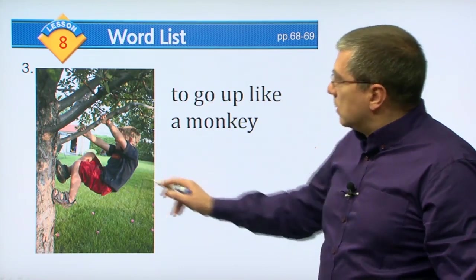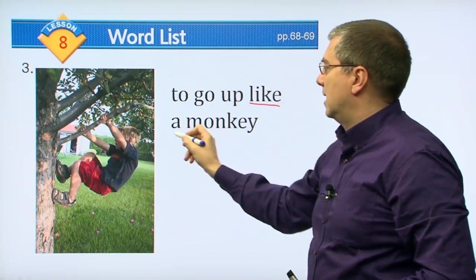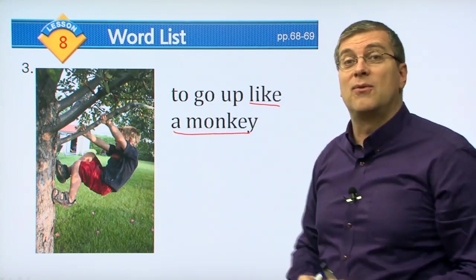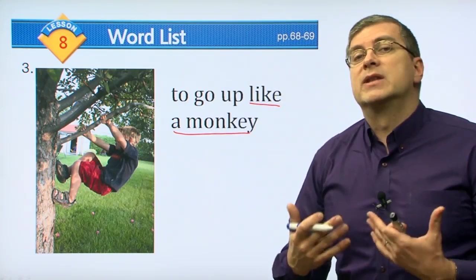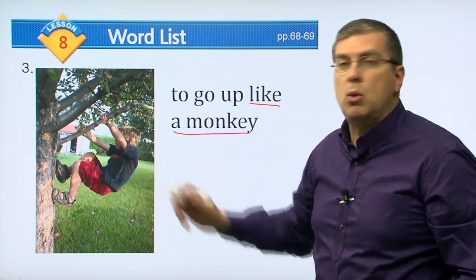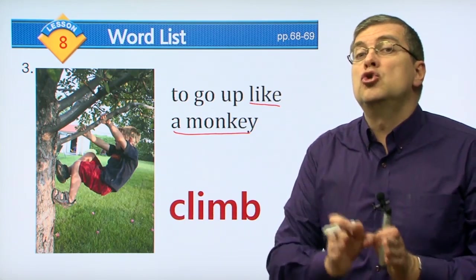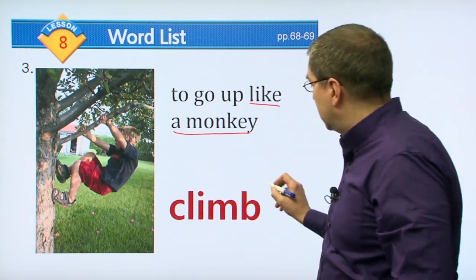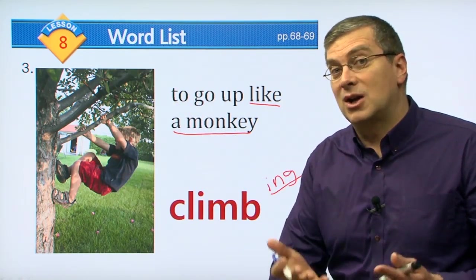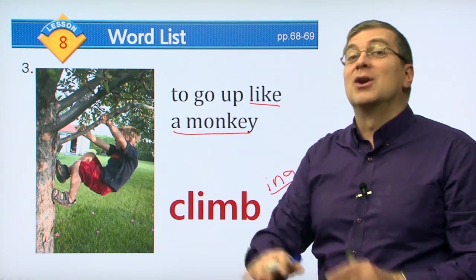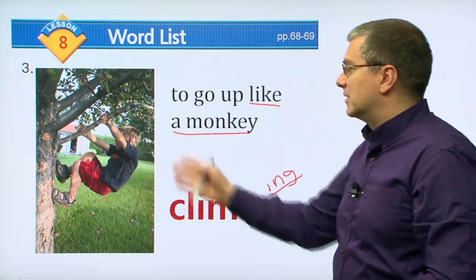What's this boy doing? He's holding onto a tree and going up into the tree. It says to go up like a monkey. If you think about monkeys, what do they do really well? They can go up in the tree very quickly. The verb we use to describe this action is climbing. He is climbing the tree. Can you climb a tree? But be careful - make sure your mother or father is watching when you climb. It can be dangerous.